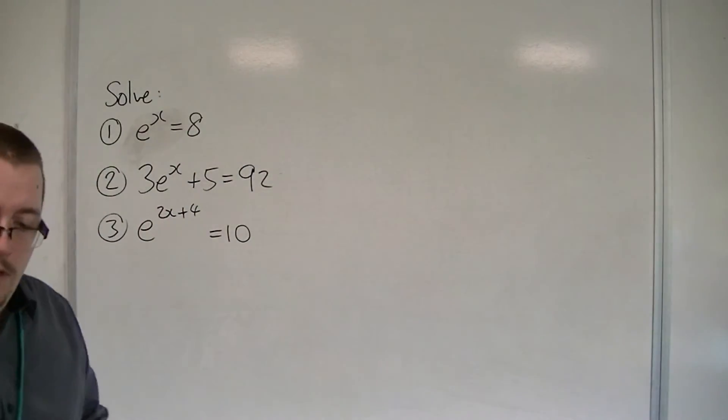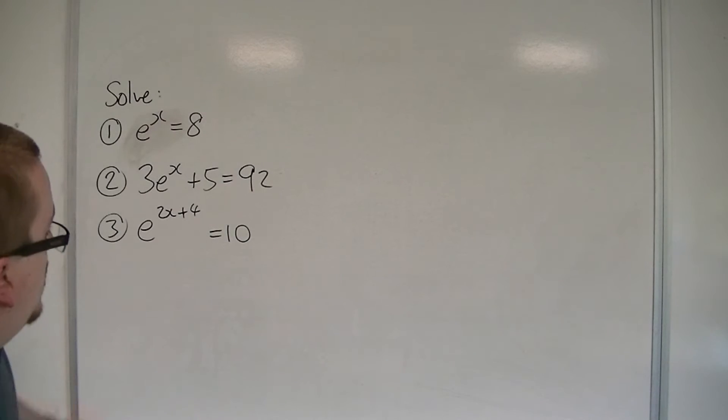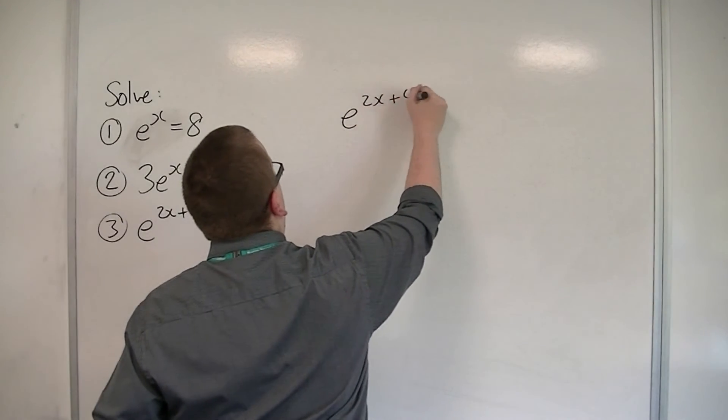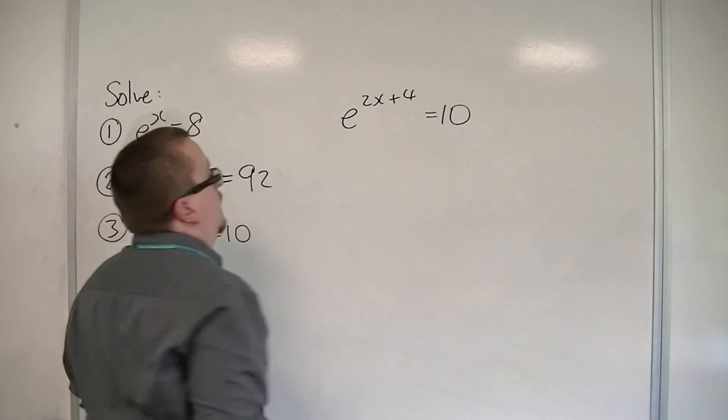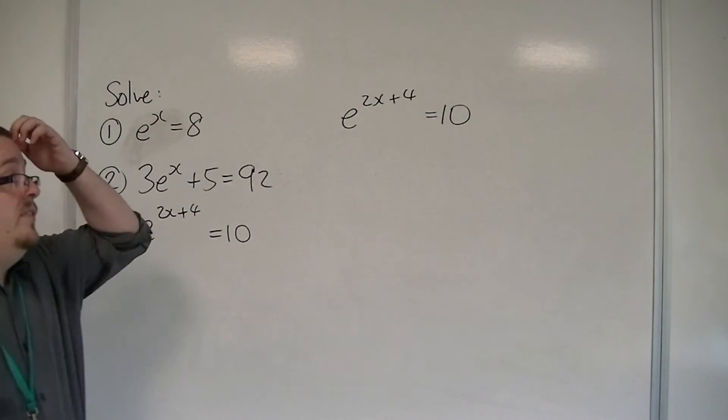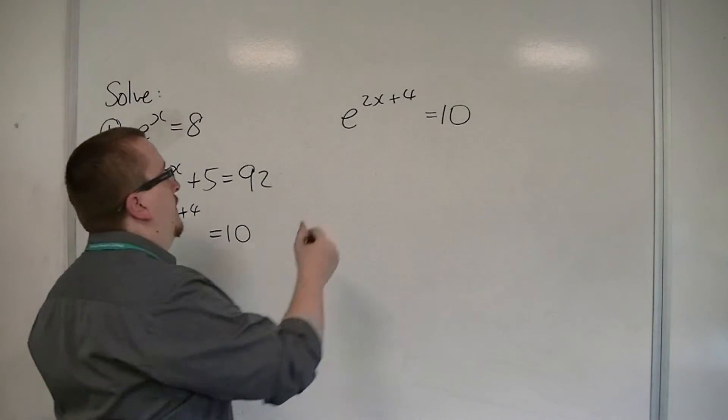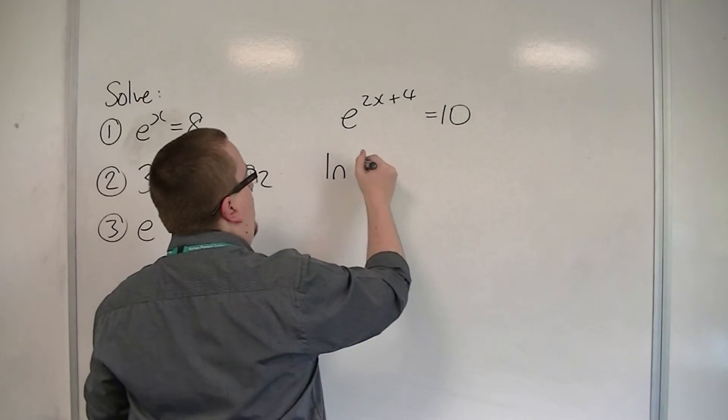So the last one. Number 3. e to the 2x plus 4 is equal to 10. So at this stage, really what we're going to do is log both sides. That's going to be our way of getting around this.